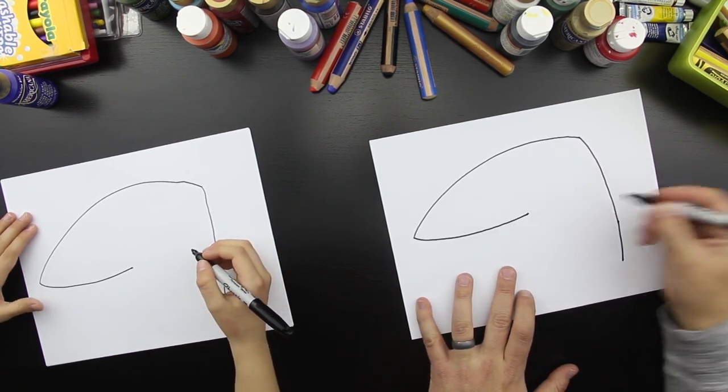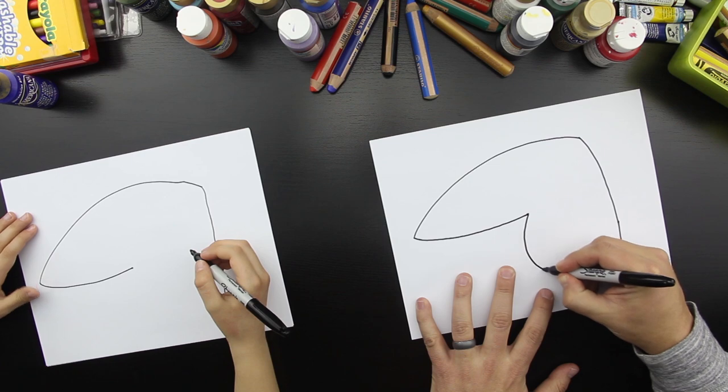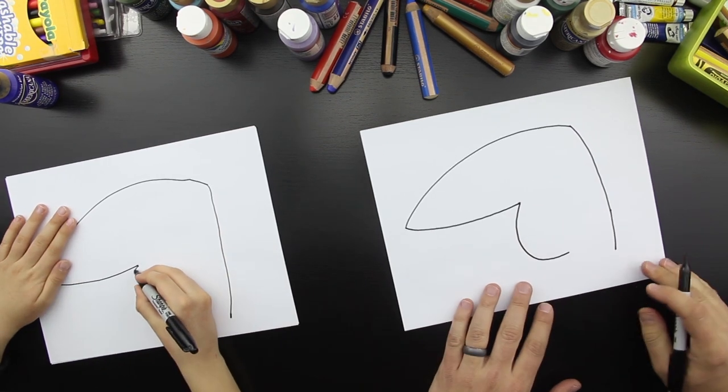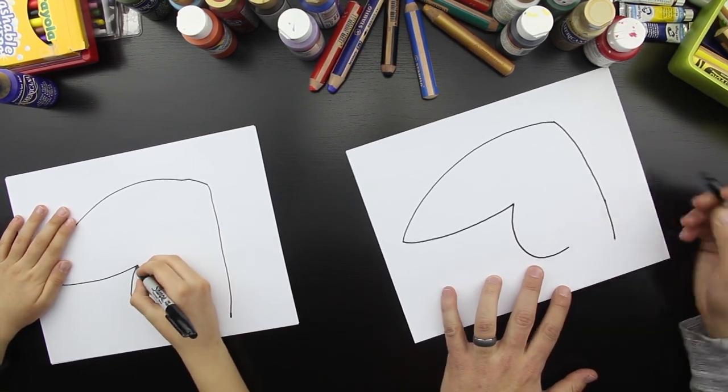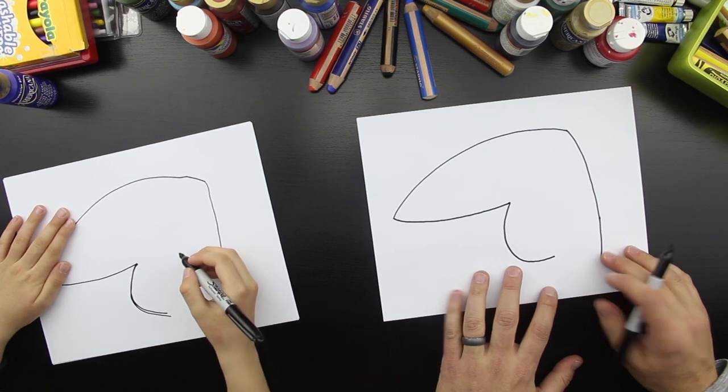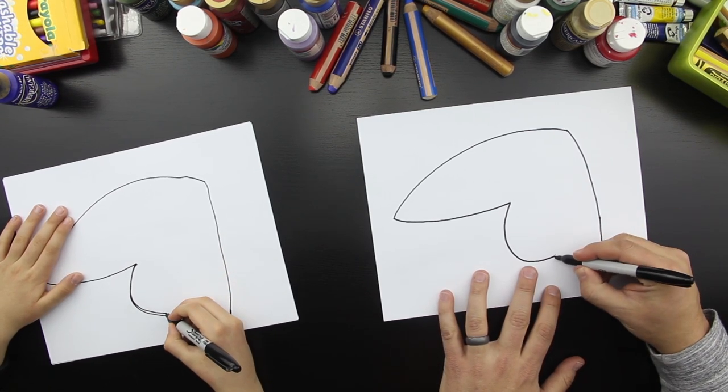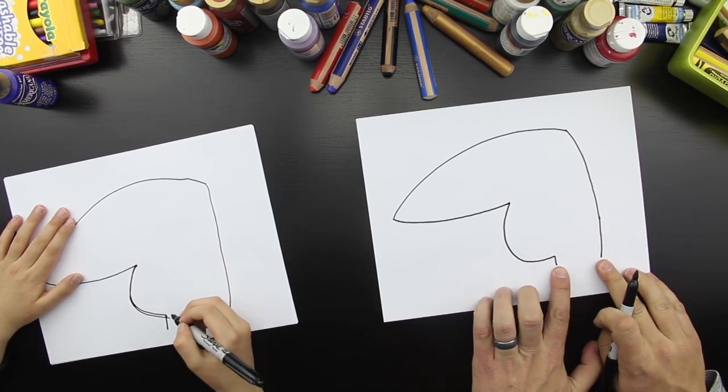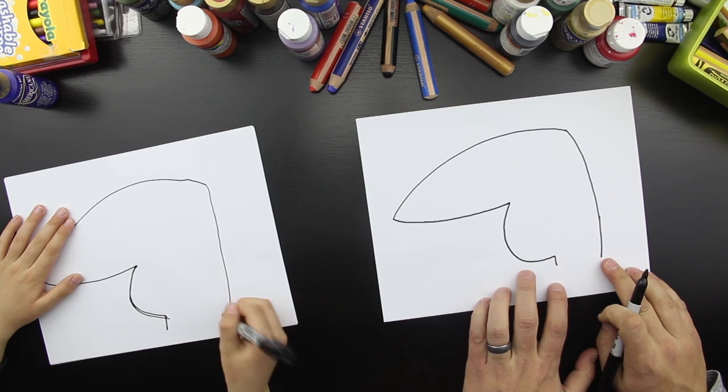Then we're going to draw a little belly on them. Draw a little round belly. Good job. Then we're going to draw a little line that comes down so it's about the same length as the other side. You did good.